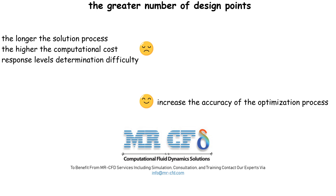Also, the number of input parameters or variables will affect the DOE and RSM method. Increasing the number of defined input variables prolongs the production time of the DOE and also makes it difficult to create an accurate response level, because the response level depends on the relation between the input variables and the output parameters.